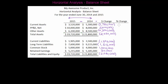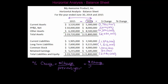Now I have to do the percent change. The percent change formula is: dollar change divided by the previous year — you can also say the starting year, the original year, or the oldest year. So essentially we're going to take the dollar change and divide it by the 2014 number because that is my previous year.